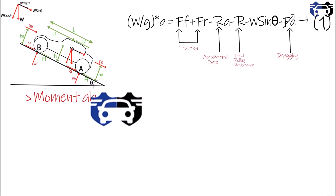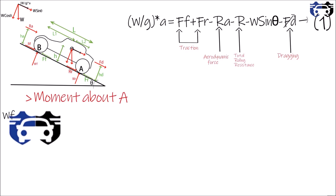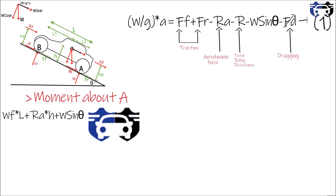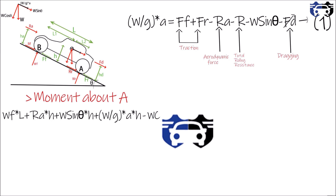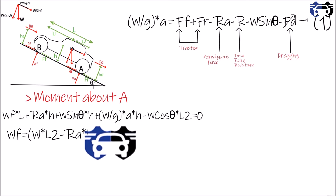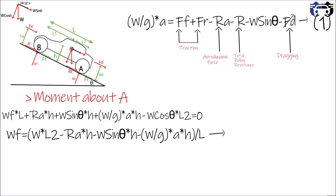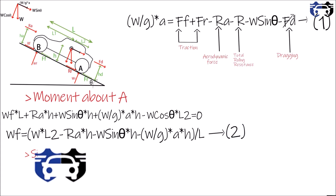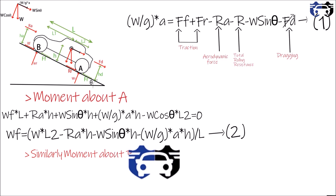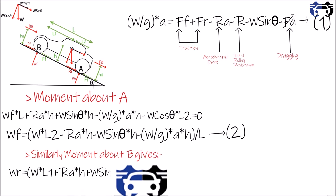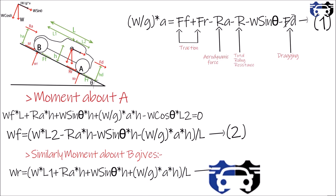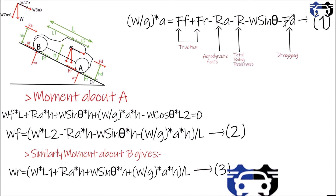Taking moments about point A: Wf·l, R·h, W·sin(theta)·h, and W/g·a·h are all clockwise, while W·cos(theta)·l2 is anticlockwise. From this we get Wf — this is equation 2. Similarly, taking moments about point B gives Wr — this is equation 3.